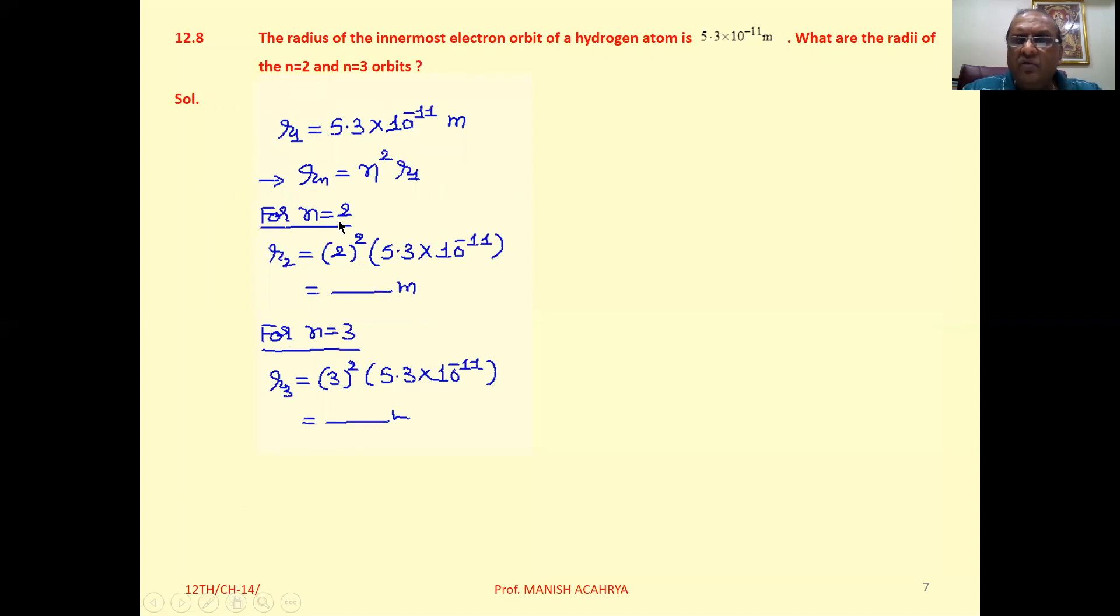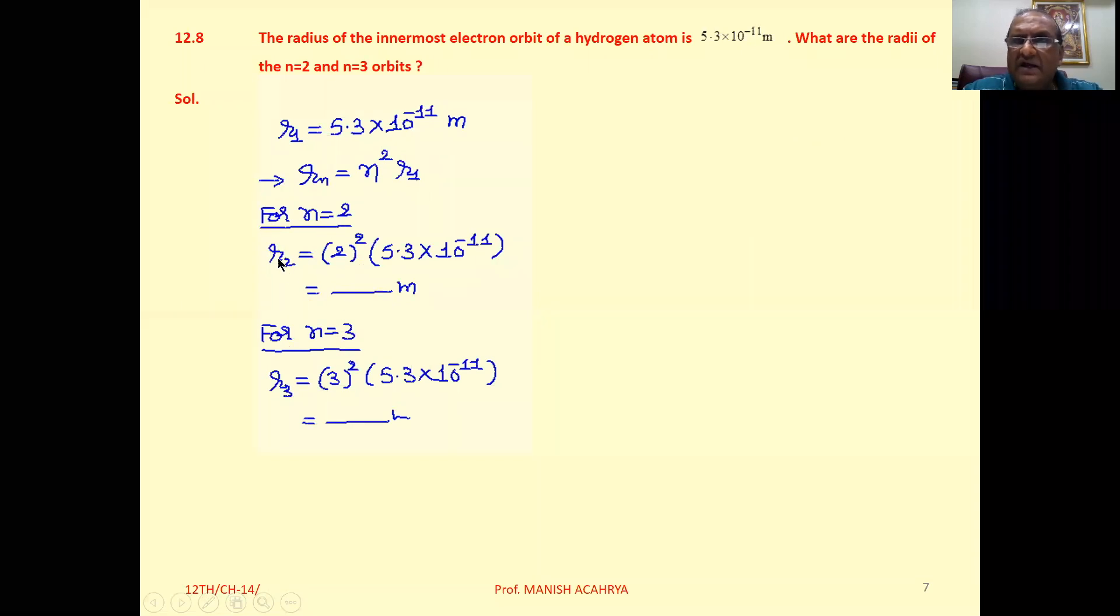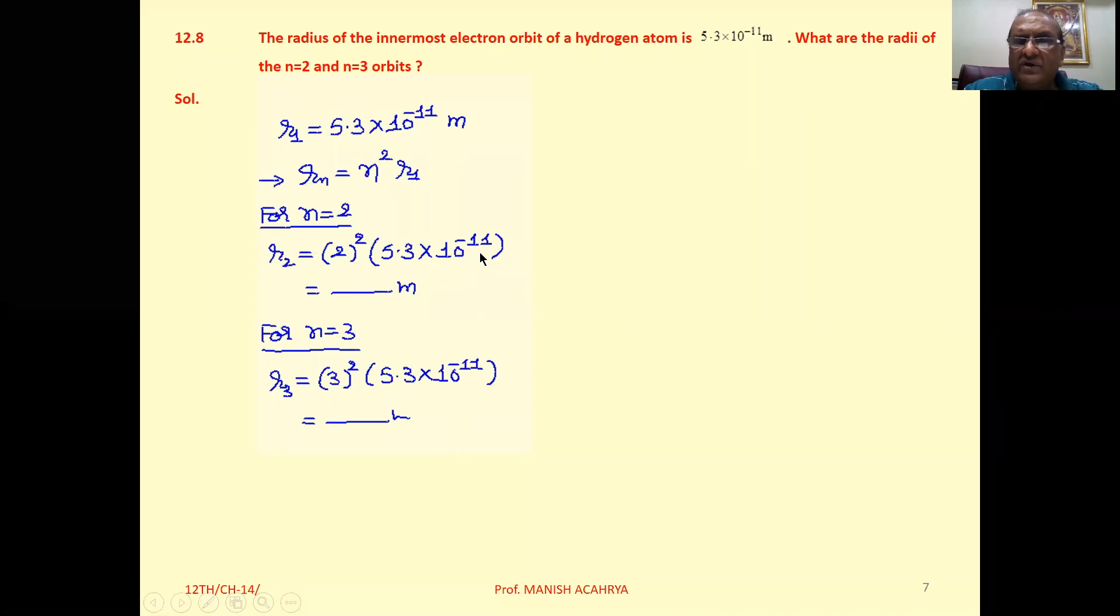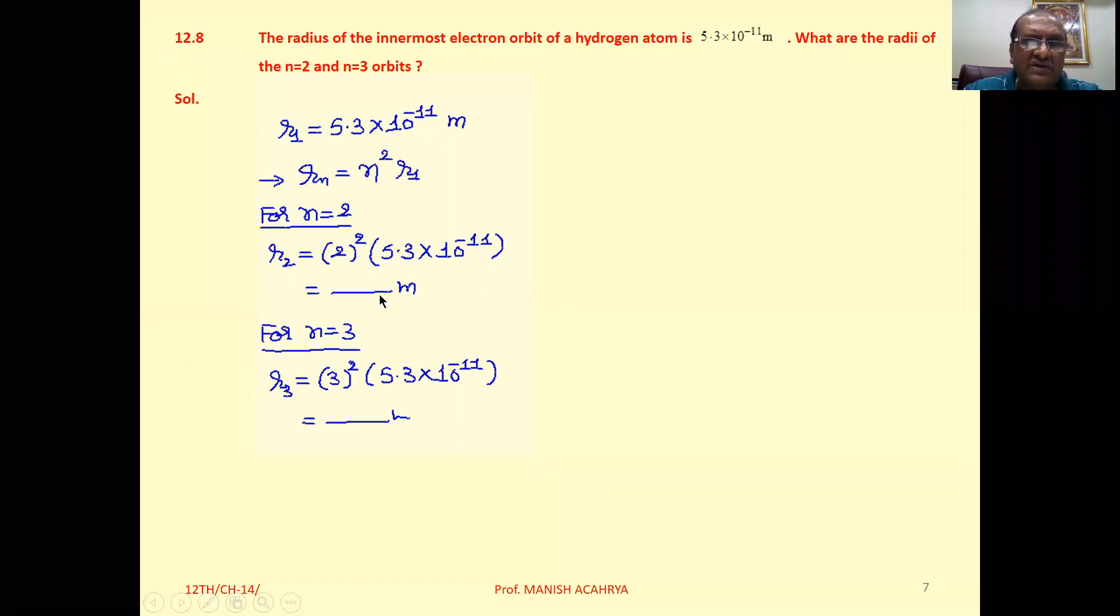So for n=2, we can write R2 = 2² × 5.3 × 10^-11. Solve this one.